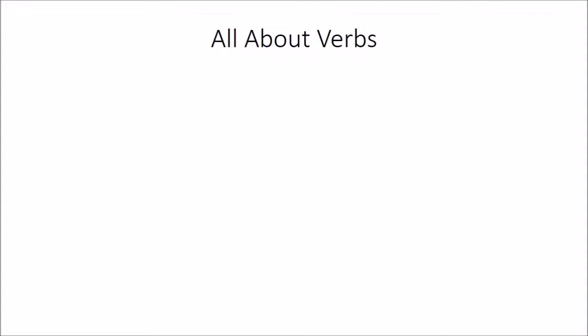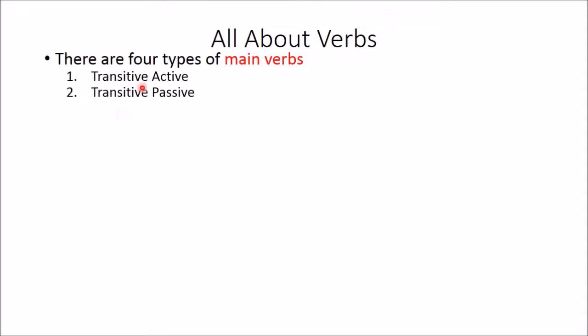We're going to start this lesson reviewing all about verbs. There are four types of main verbs and we have learned all four types. There's transitive active and transitive passive. These two types of verbs are action verbs and they transfer their action — we know that because the word 'trans' means transfer.